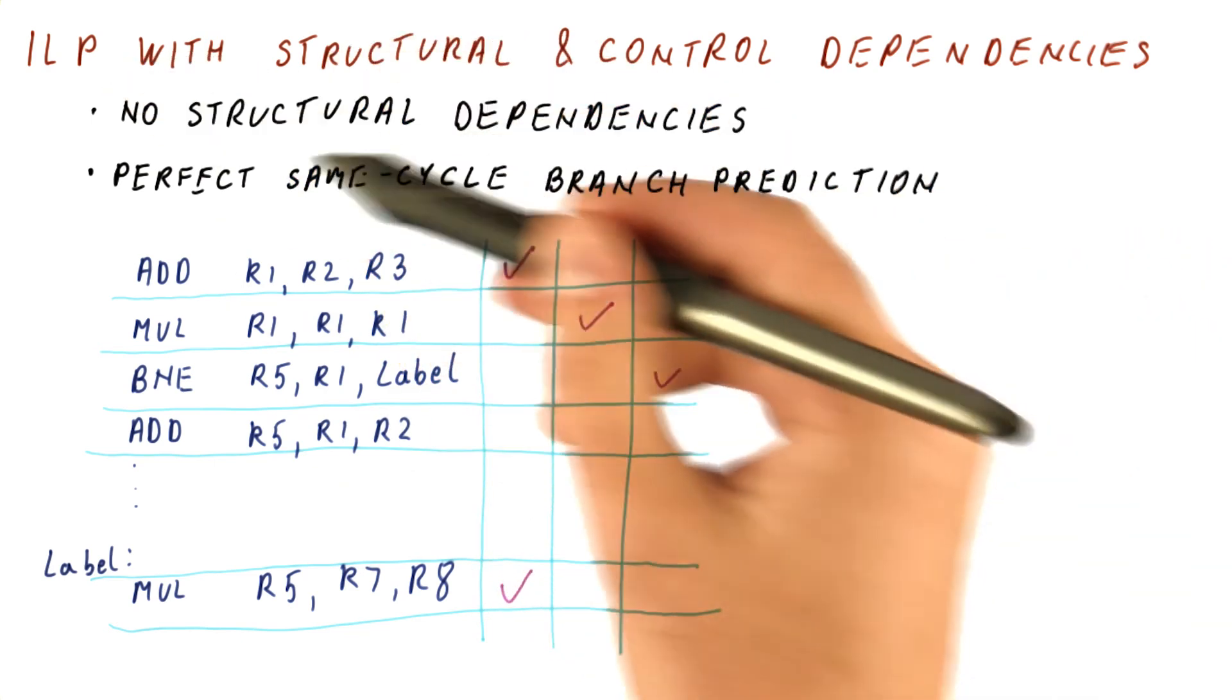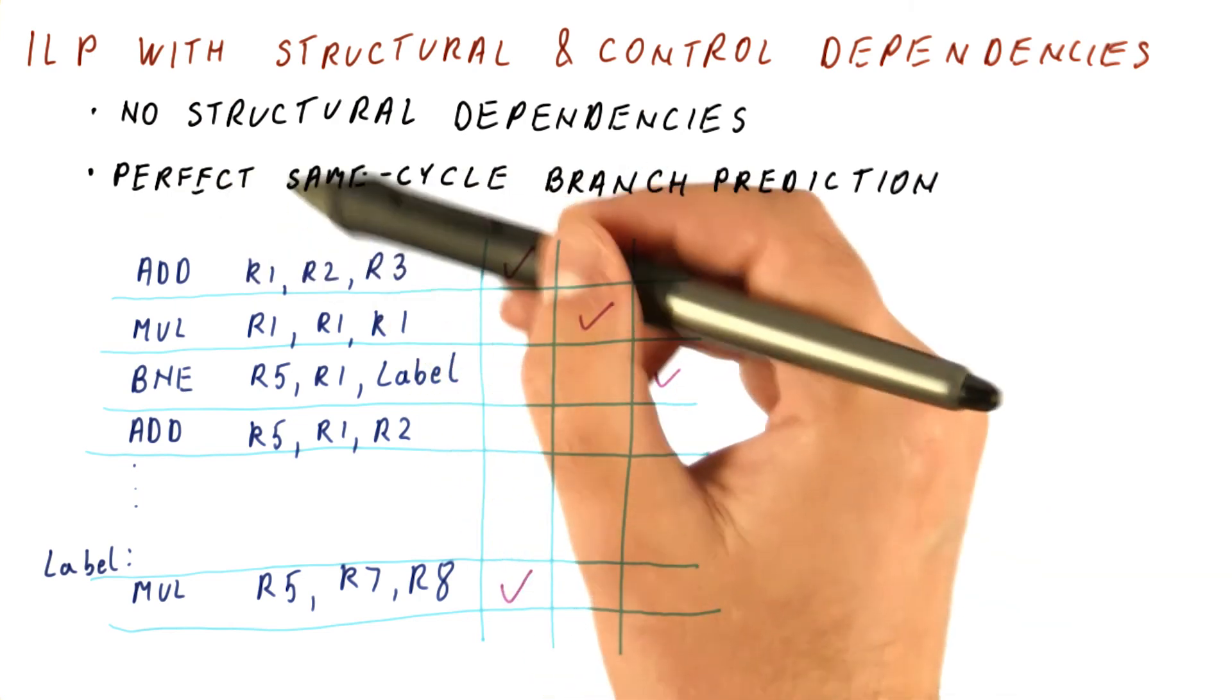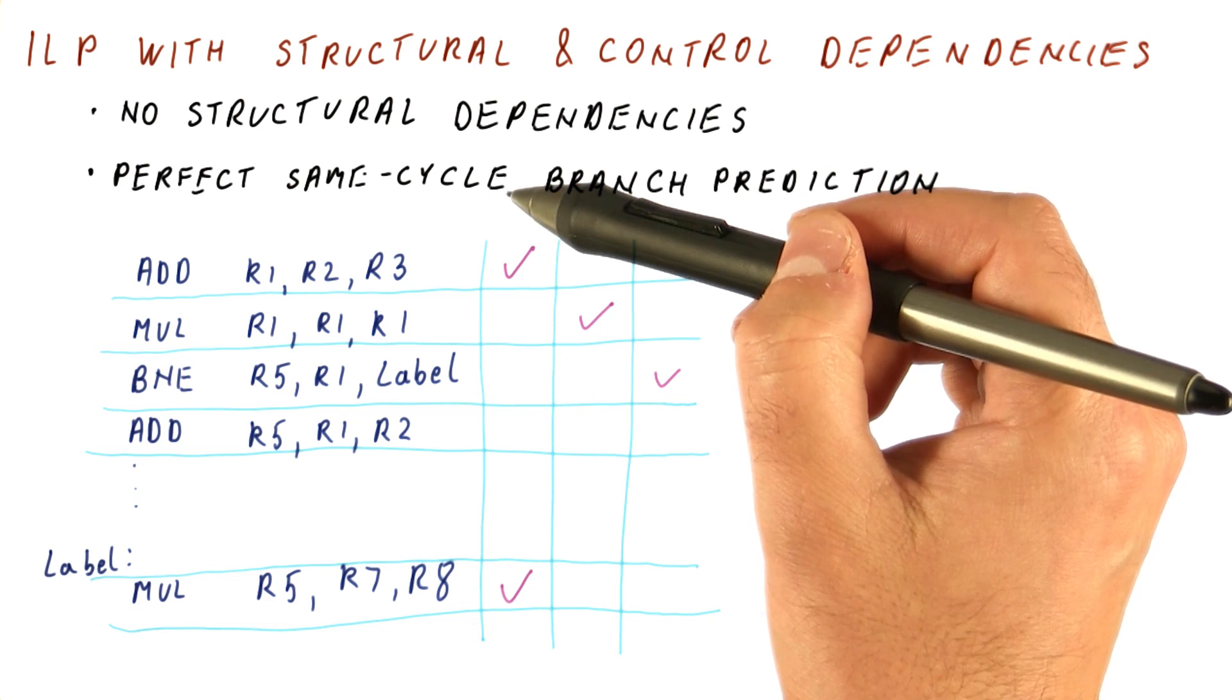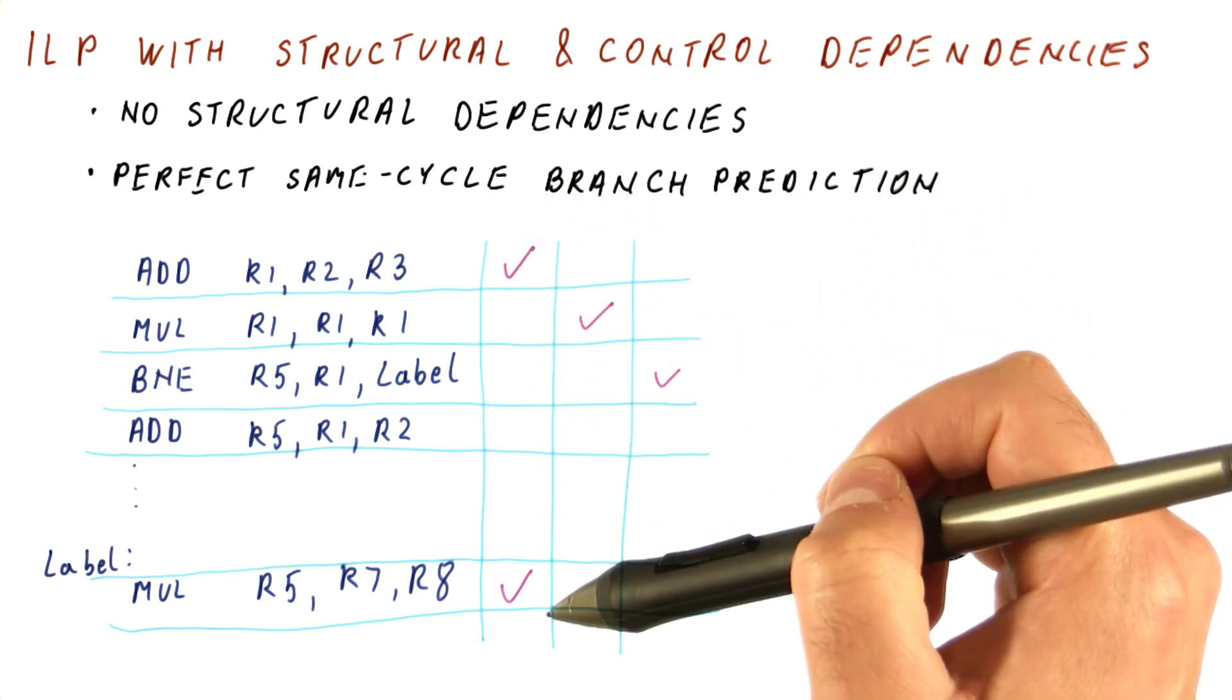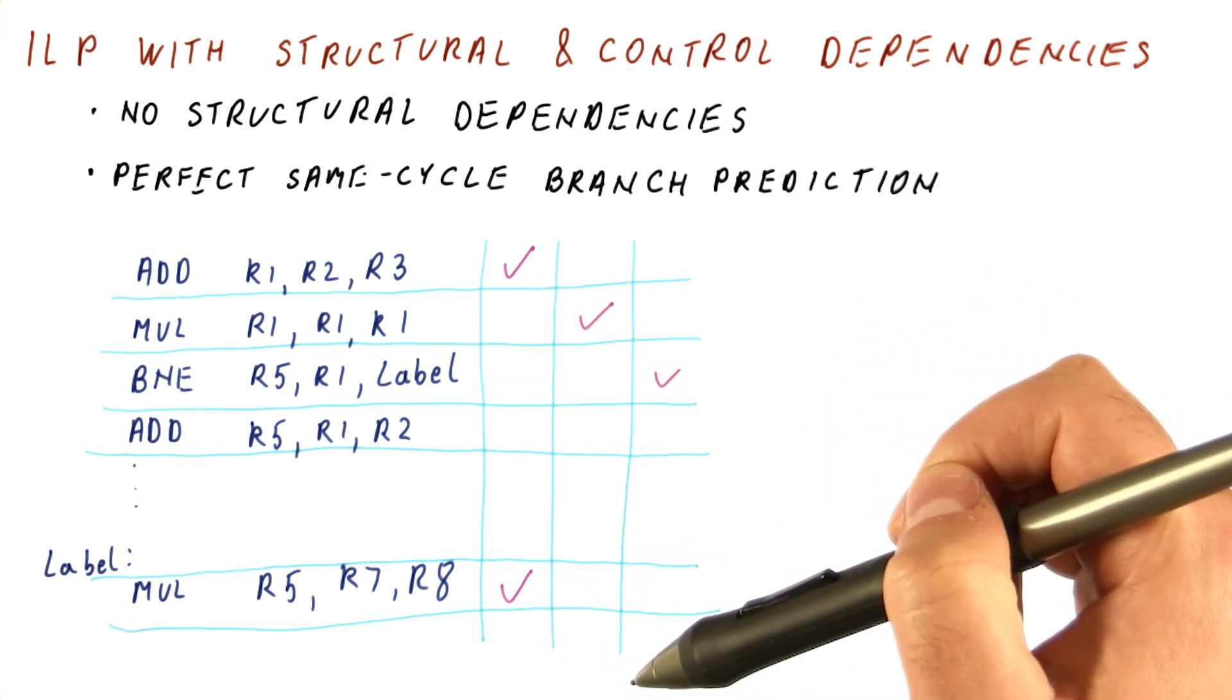Because we are assuming perfect branch prediction where all the branches in the program are perfectly predicted in the same cycle as soon as we begin fetching the program. And from the beginning of the program, we knew exactly which instructions will execute, so that we can just do them according to data dependencies.